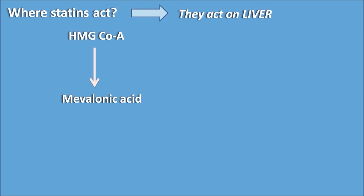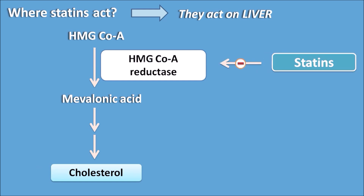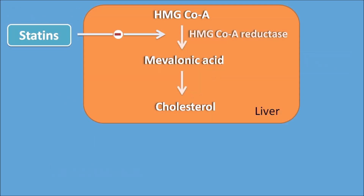Within the liver, HMG-CoA is converted into mevalonic acid by the enzyme HMG-CoA reductase, which is the key rate-determining enzyme in the biosynthesis of cholesterol. Mevalonic acid is then converted into cholesterol by sequential steps. Statins inhibit this rate-limiting enzyme HMG-CoA reductase, thereby inhibiting cholesterol biosynthesis. But how do they decrease cholesterol levels in the blood?